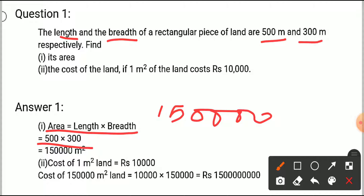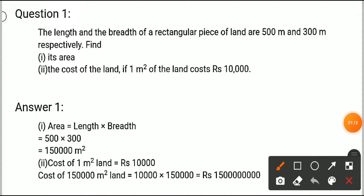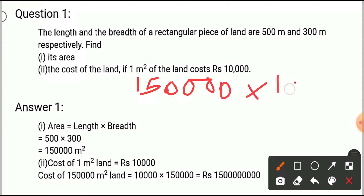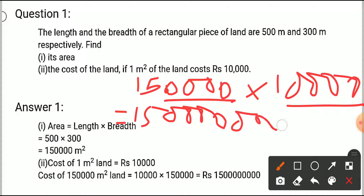Now we need to calculate the cost of the land. It is given that 1 meter square of land costs rupees 10,000. So we will multiply 150,000 by 10,000. We have four zeros here and four zeros there, so the final answer has 15 followed by eight zeros.